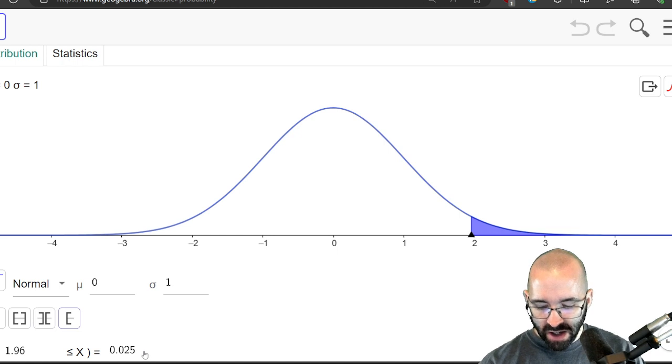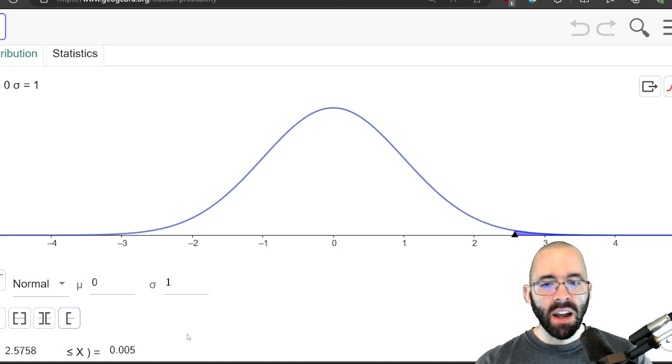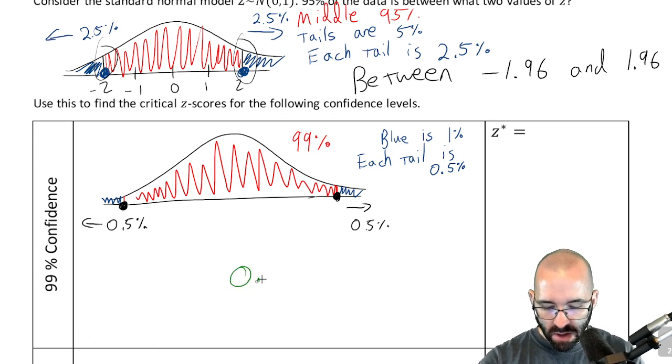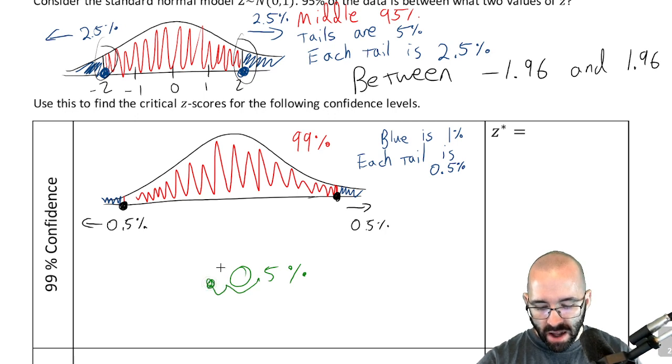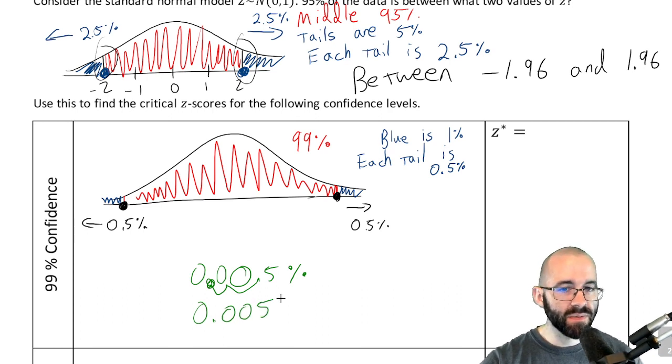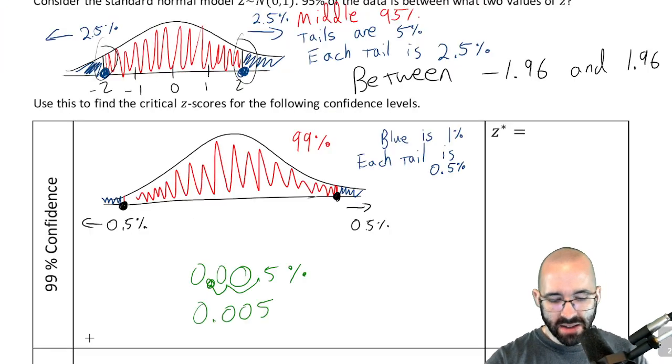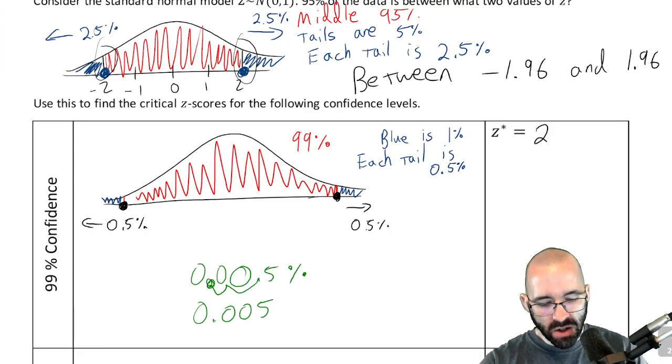So again, we can just go over here instead of 2.5%, half a percent. And remember, if you're a little rusty with percents, remember that you can convert a percent to a decimal by moving the decimal place twice, one two. And then there's a zero here. We get as a decimal it's 0.005 like this. Okay, so that's what we typed in here, 0.005, and we see that a z-value of 2.576 is our critical z-score.